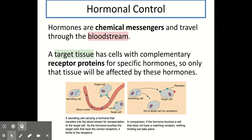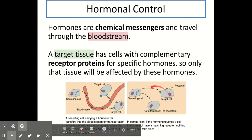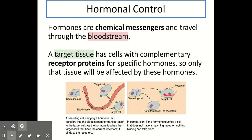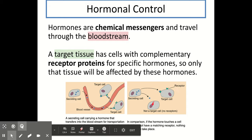You can see this in the diagram on the bottom right here. An endocrine gland, labelled as a secreting cell, has released a particular hormone and it's travelled through the bloodstream. Any target tissues which have a complementary receptor protein on their surface will be affected, but any cells which do not have a matching receptor protein on their surface will not be affected.